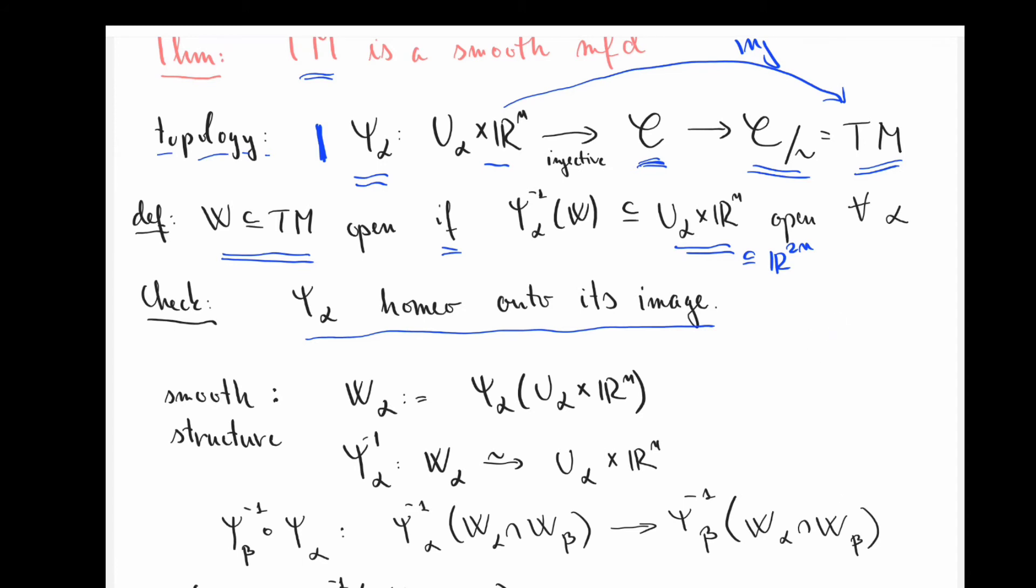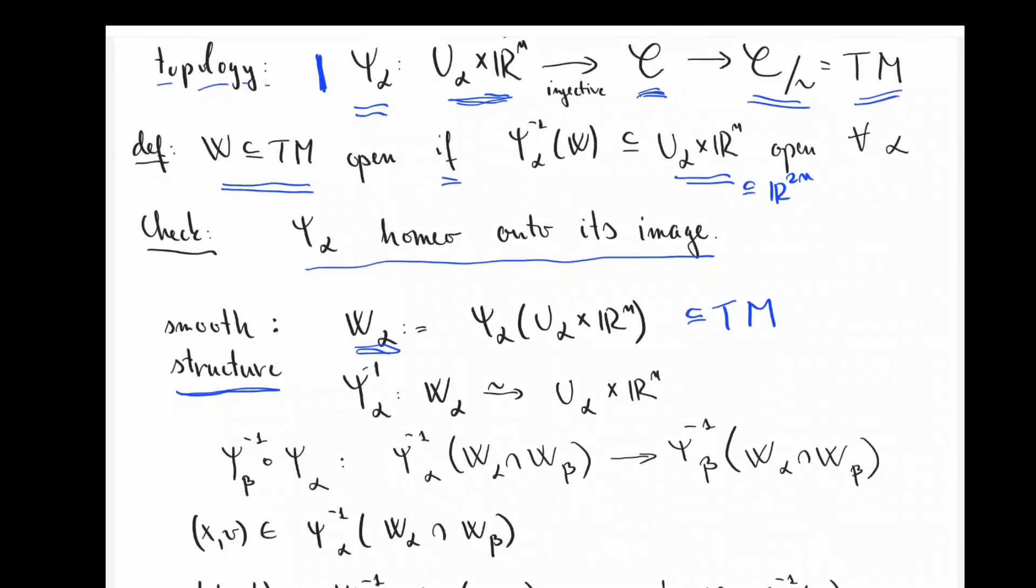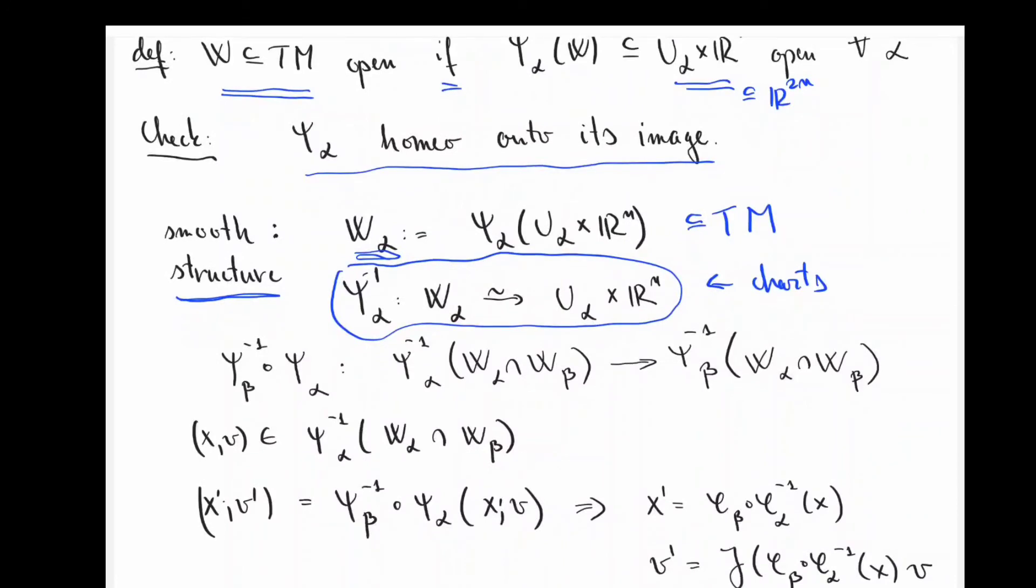So I do that next. So a smooth structure. So it's no secret. I want to put together the charts using the psi alphas. So the psi alphas are parametrizations. So I take their inverses, so I take the image of the psi alphas. I get these sets w alpha, which are subsets of the tangent bundle, and psi alpha inverse are going to be my sort of intended charts. I have to check if the transitions are smooth or not, so I just write out what the transitions are. So this is me attempting to write out the transition maps. So by definition, this is what they look like.